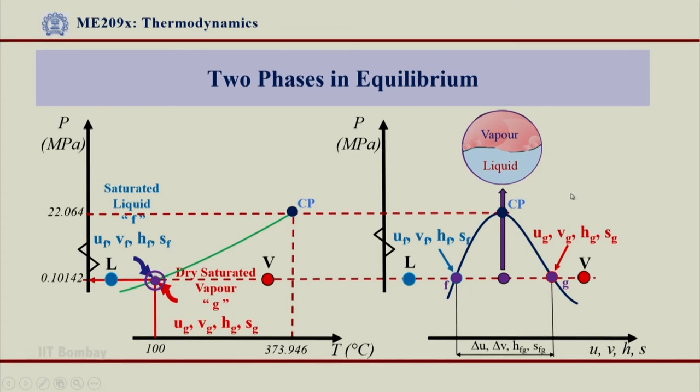So, SF is less than S less than SG or HF is less than H less than HG or VF less than V less than VG and UF less than U less than UG, you are in a two phase condition on this line. So, if at all a situation arises where you find U lies between UF and UG, we know for sure that it is in two phase condition, or S lies between SF and SG, we are for sure know that we are on the two phase zone.